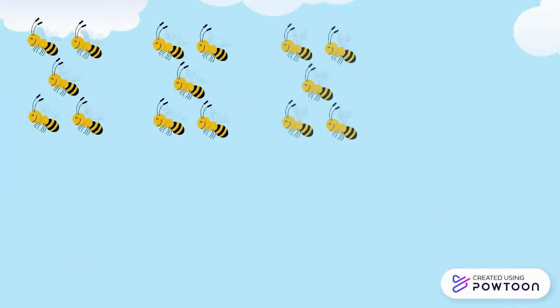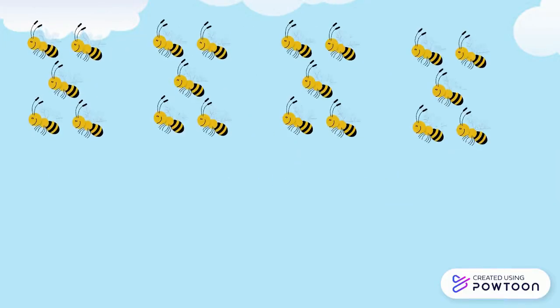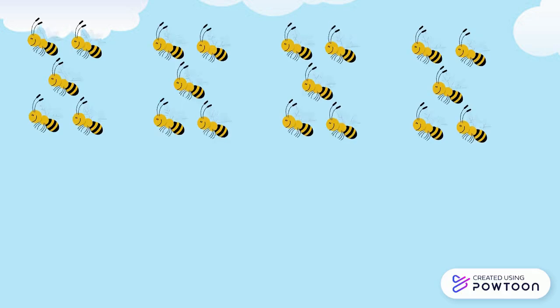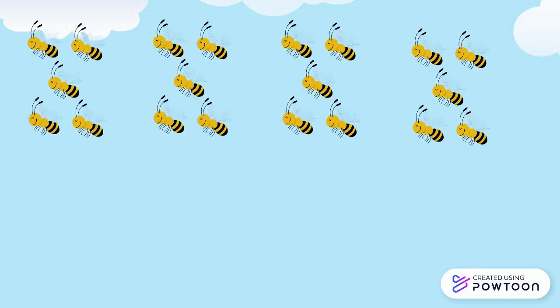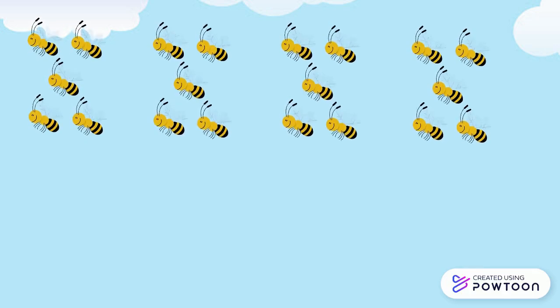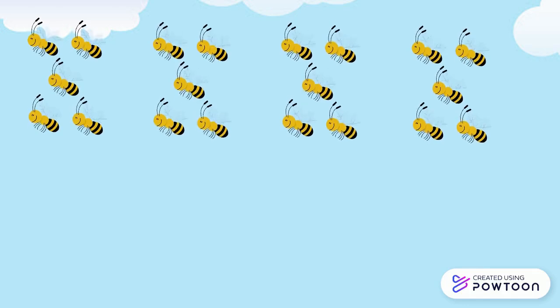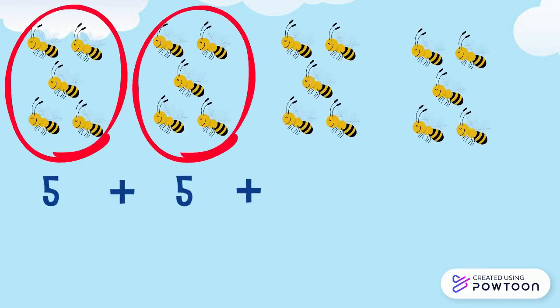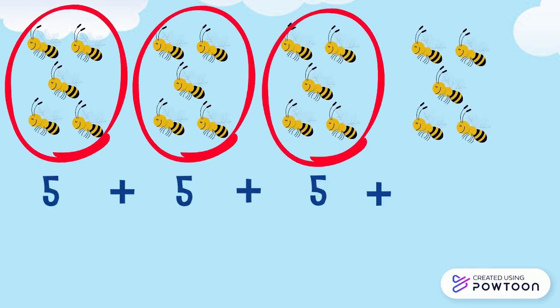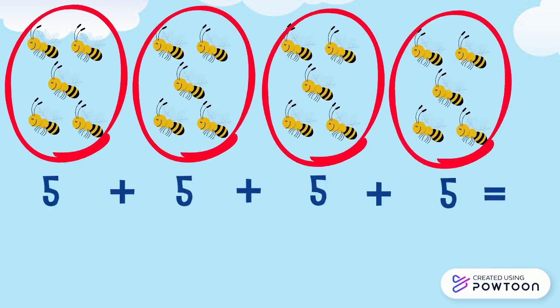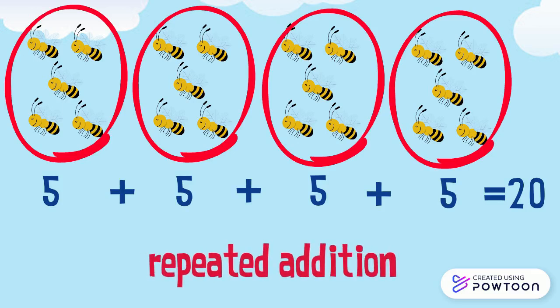We can do the same thing with 4 groups of 5 bees. We can count the bees — they are 20. And we can add the number of bees in each group: 5 plus 5 plus 5 plus 5 equals 20. This is a repeated addition. We have repeated the number 5 four times.